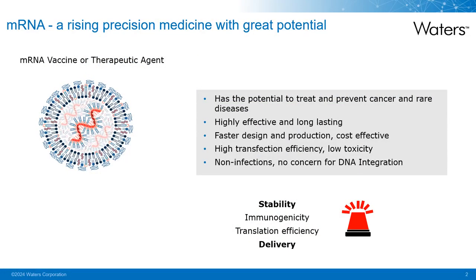mRNA therapeutic agents are regarded as a rising precision medicine with great promise for preventing and treating cancer and genetic diseases, because they can produce just about any functional protein and peptide in the human body. The production of in vitro transcribed mRNA has many advantages, such as faster design and production, highly effective and long lasting, high transfection efficiency, low toxicity, no risk of accidental transfection or mutagenesis, and easier and cheaper to produce compared to protein therapeutics. These extraordinary advantages allow mRNA vaccine responses to large-scale infectious disease outbreaks very swiftly, such as the COVID-19 pandemic.